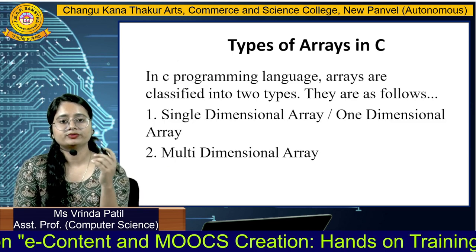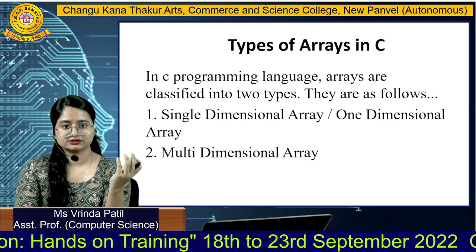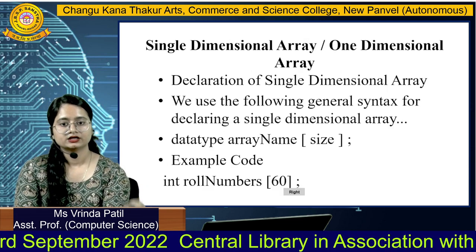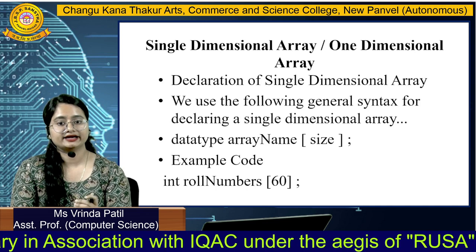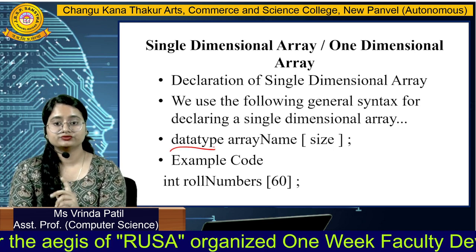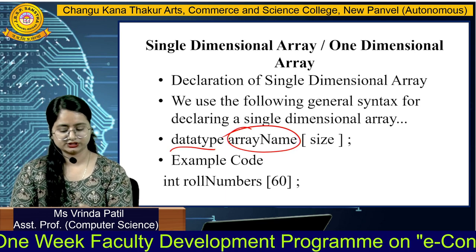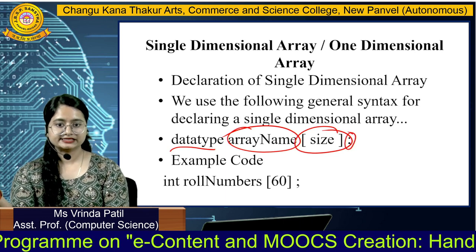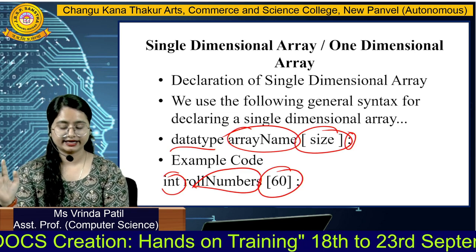Now let's move to the subtopic that is types of arrays in C. In C programming language, arrays are classified into basically two types: single dimensional array — also called one dimensional array — and multidimensional array. For declaring a single dimensional array, we use the following general syntax: first mention the data type, then choose the array name, then the size in square brackets, and end with a semicolon. In the example shown, this is your data type, this is your array name, and this is your array size.